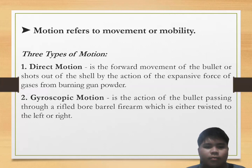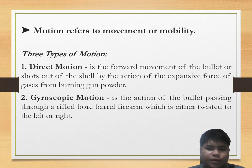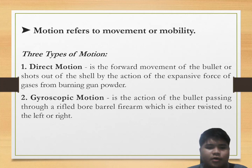Second is gyroscopic motion. It is the action of the bullet passing through a rifled-bore barrel firearm, which is either listed to the left or right. Bullets fired from a rifled bore will either rotate counterclockwise or clockwise.